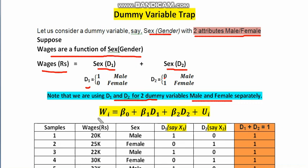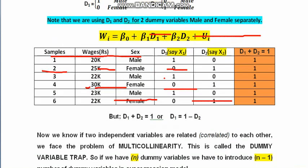Our multiple regression equation would look like: W = β₀ + β₁D1 + β₂D2, where D1 and D2 each signify the respective dummy variables for male and female.